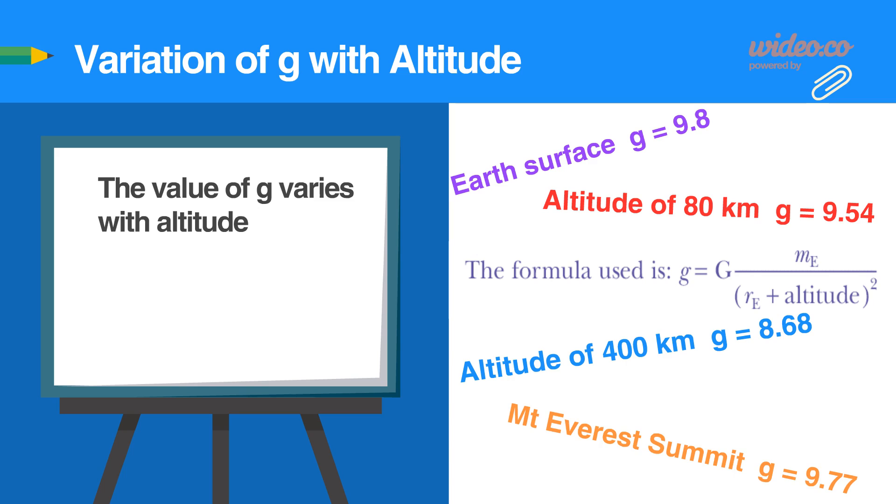It is clear that the effect of the Earth's gravitational field is felt quite some distance out into space. The formula used is g equals capital G multiplied by the mass of the Earth divided by the radius plus altitude, squared.